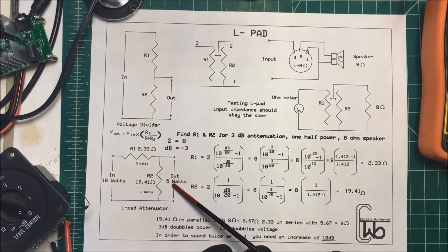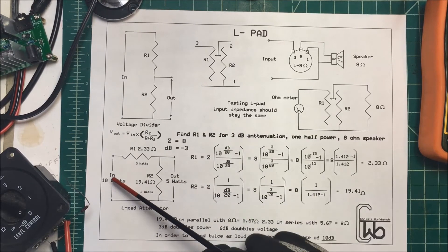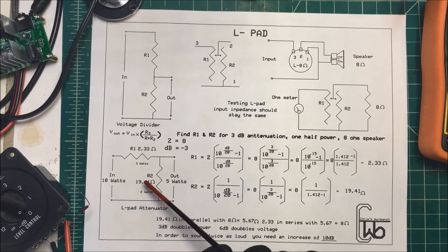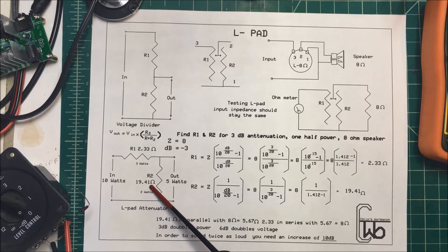Now we got 10 watts in, 5 watts out, and our amplifier is happy. It's got 8 ohms on here. So if we take our 19.41 ohms, and of course we're going to have an 8 ohm speaker across here.